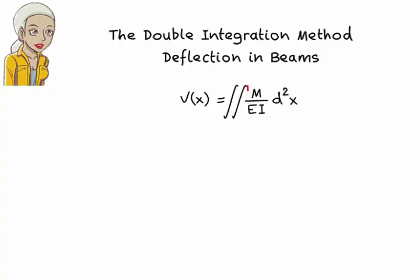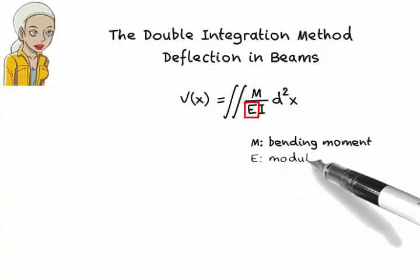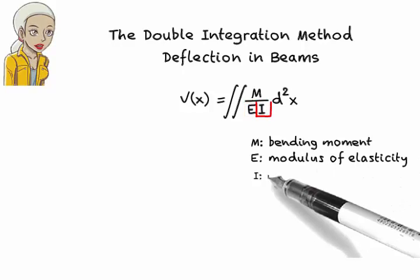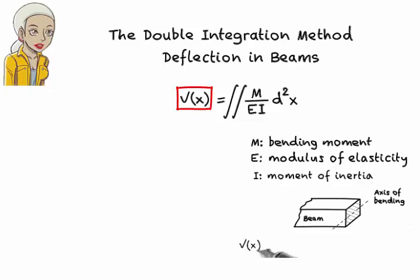The central equation in this method is deflection v equals the double integral of M over EI with respect to x. This means, if we know the equation for the beam's bending moment, the modulus of elasticity of the beam's material, and the moment of inertia of the cross-section of the beam about the axis of bending, then we can write an algebraic equation for the beam's deflection.